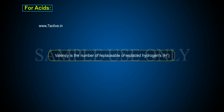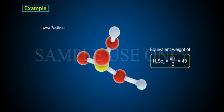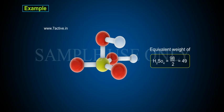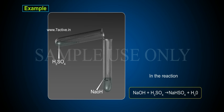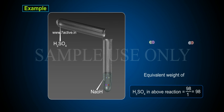For Acids, valency is the number of replaceable or replaced hydrogens (H+). For example, the Equivalent Weight of H2SO4 is equal to 98 by 2, which equals 49. However, in the reaction NaOH + H2SO4 → NaHSO4 + H2O, the Equivalent Weight of H2SO4 is equal to 98 by 1, which equals 98.